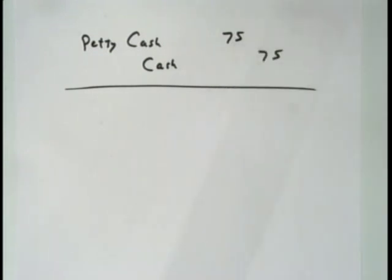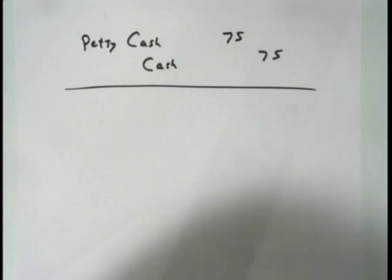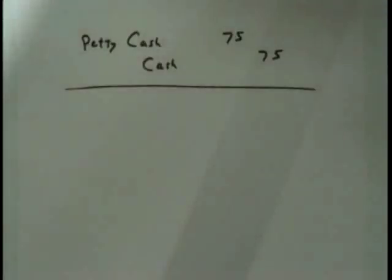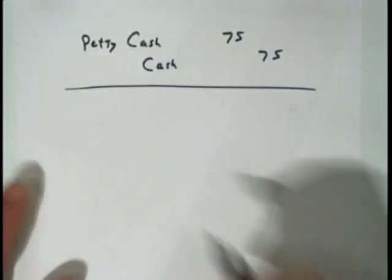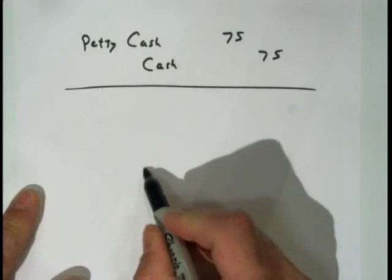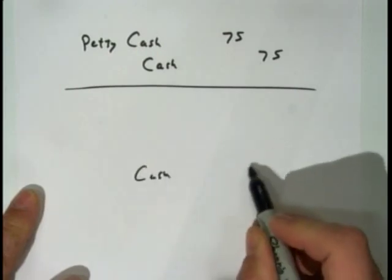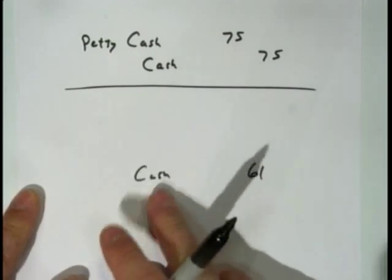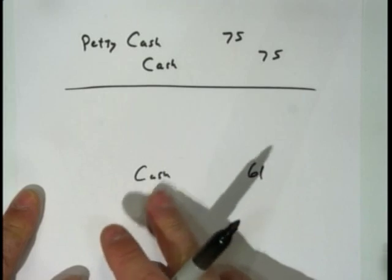Now it's time to reimburse it. Let's do the three steps. Step one: how much cash is in that box right now? $14. We want $75. So how much more cash do we put in? $61. So we credit cash for $61 — not petty cash, credit cash.